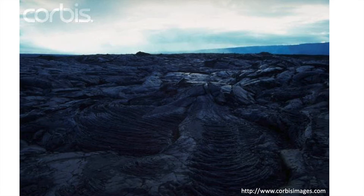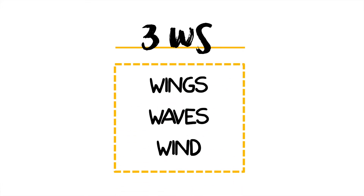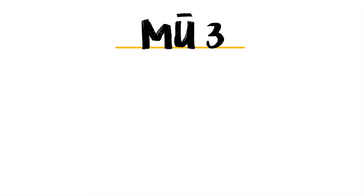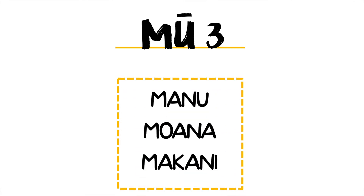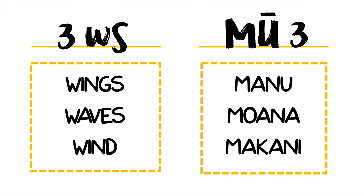But how did they get across that ocean? They got here using three dispersal methods we like to call the three W's, and they are wings, waves, and wind. You can also remember these dispersal methods in 'ōlelo Hawai'i. If you hold up three fingers like a W and flip them over, you get our mu'i, or our mu'i kolu. We have our manu, our moana, and our makani. Here they are side by side in case you want to recap.